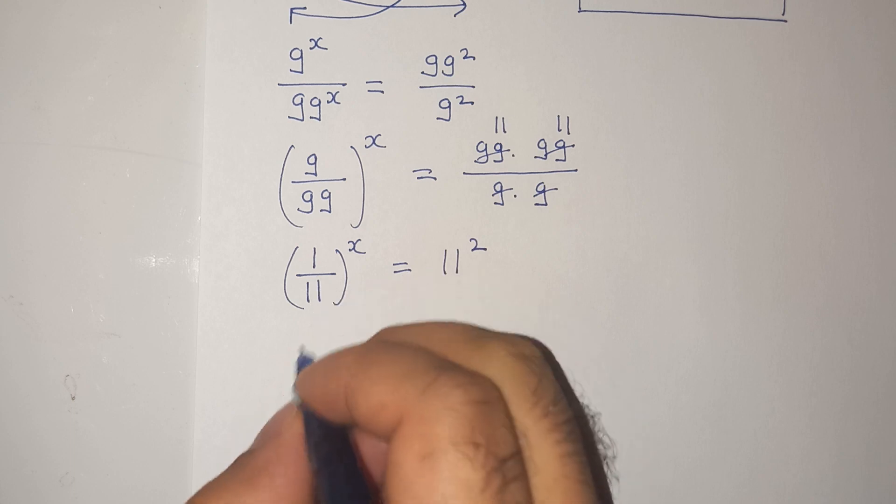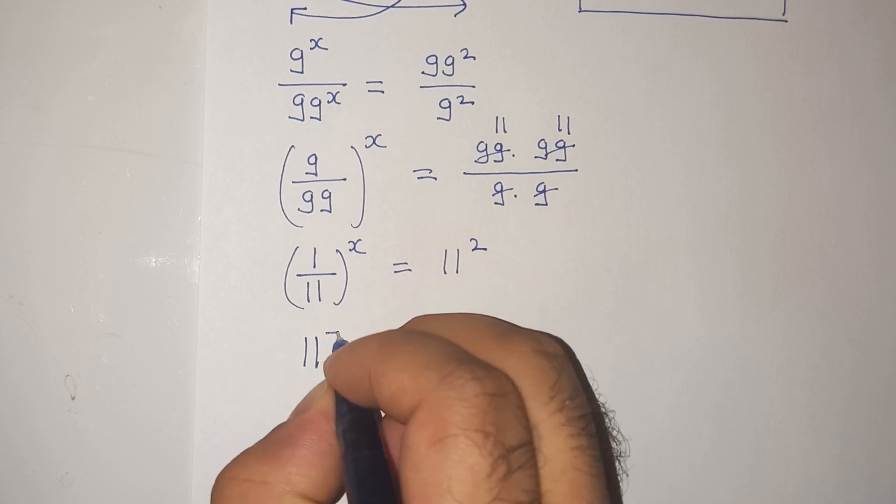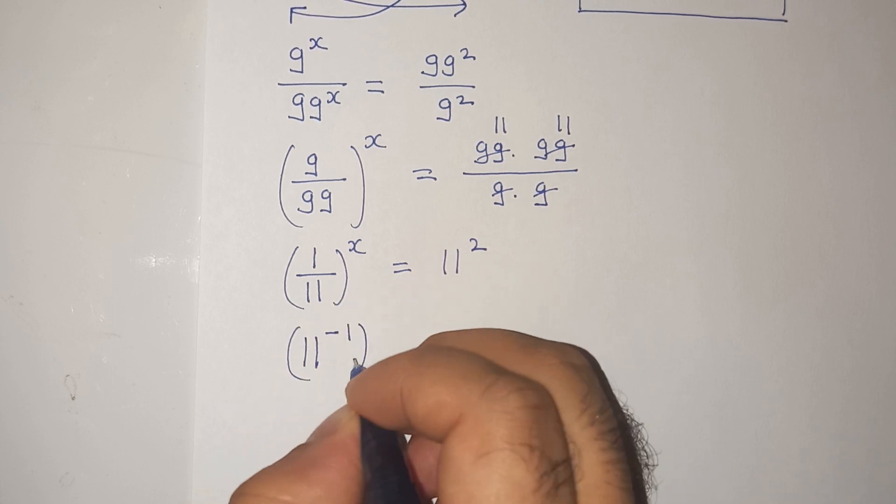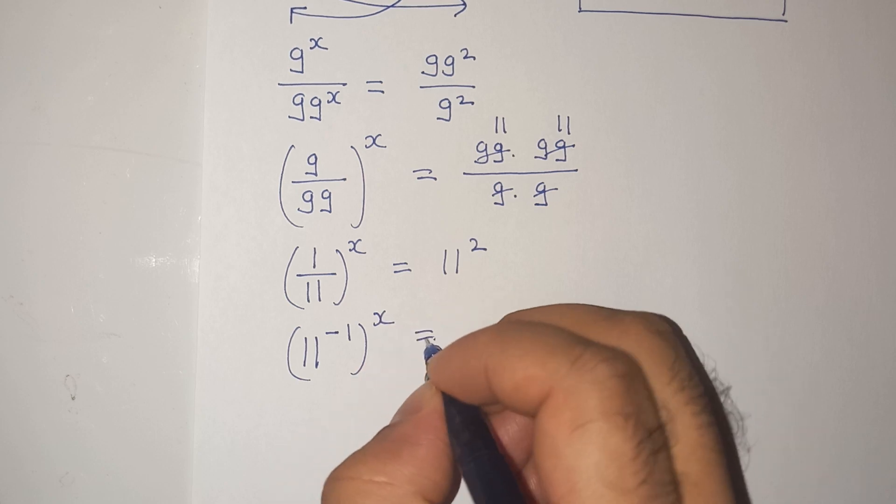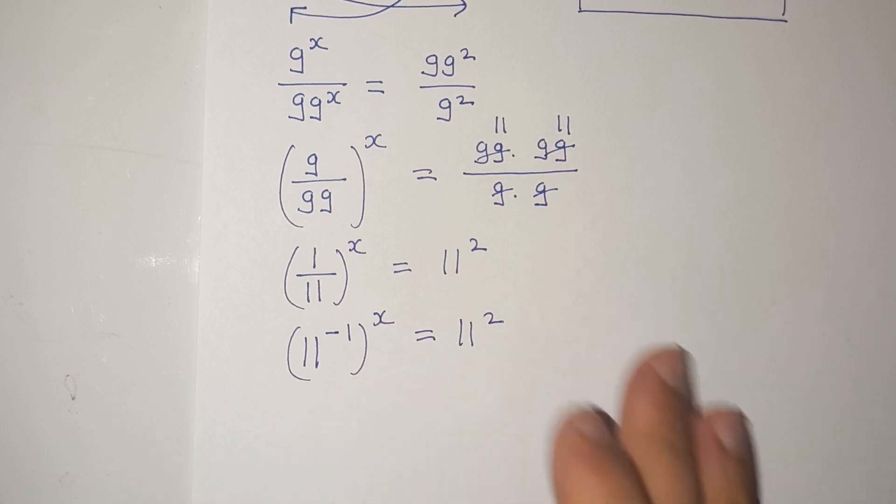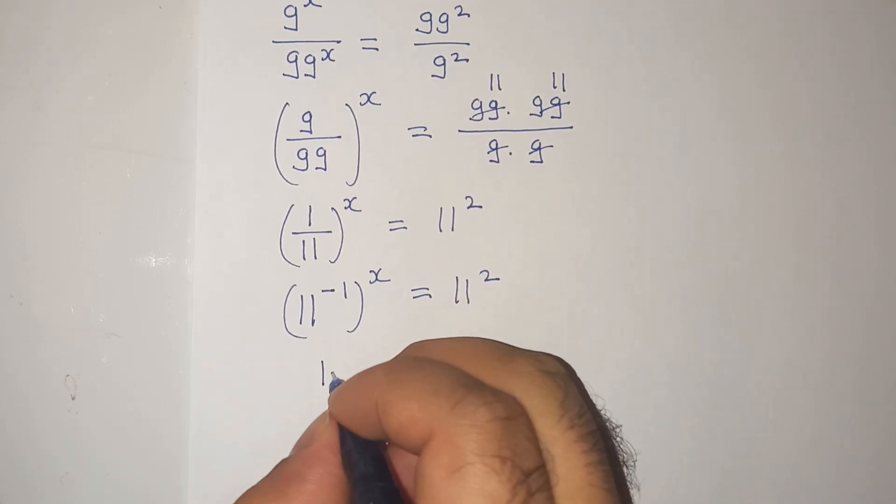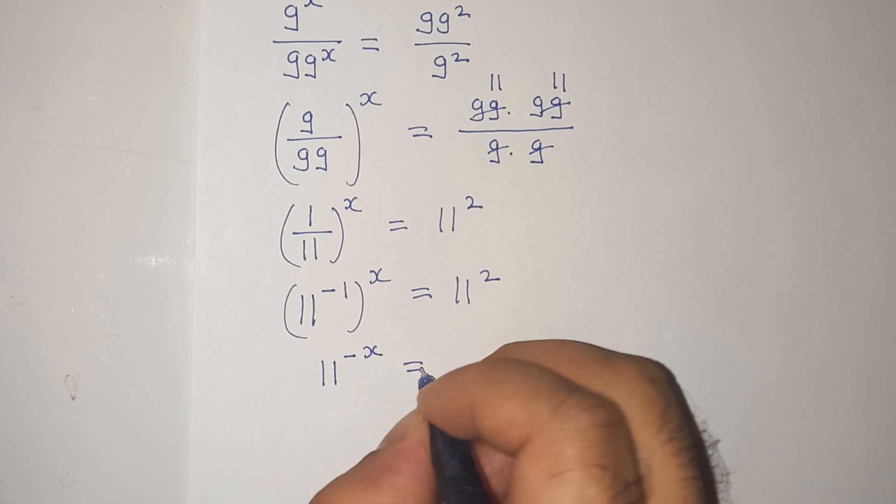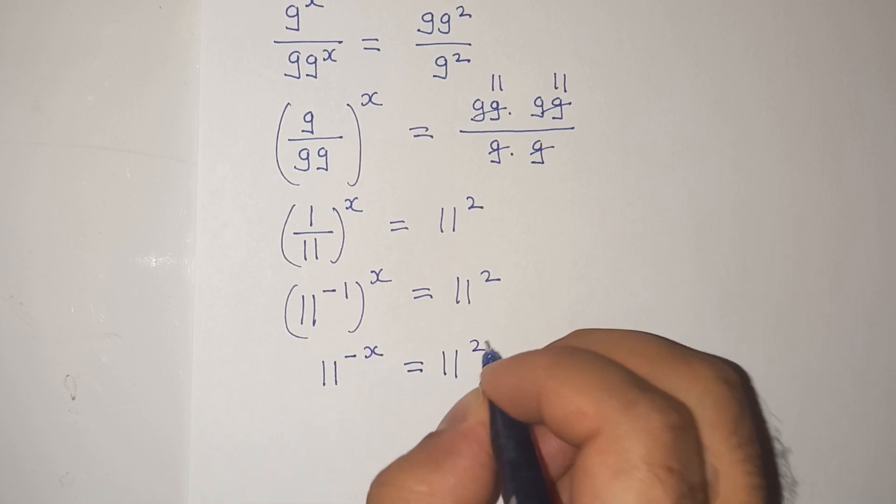Now this 1 divided by 11 can be written as 11 power minus 1 power x equals to 11 square which is 11 power minus x equals to 11 square.